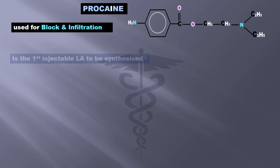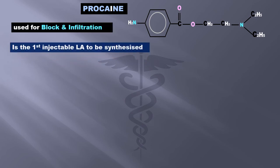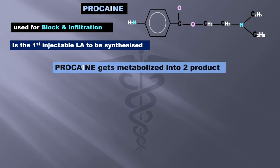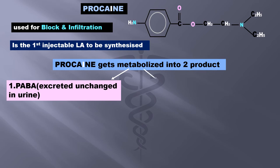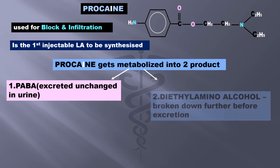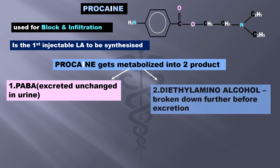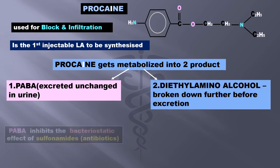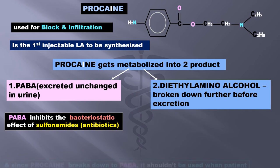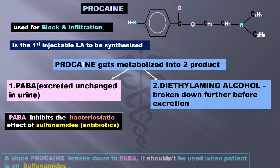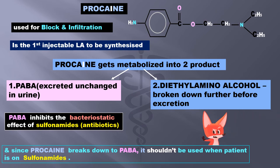Procaine is used for block and infiltration. It is the first injectable LA to be synthesized. Procaine gets metabolized into two products: one, PABA which is excreted unchanged in urine; and two, diethylamino alcohol, broken down further before excretion. PABA inhibits the bacteriostatic effect of sulfonamides, so since procaine breaks down to PABA, it should not be used when a patient is on sulfonamide drugs, as the antibiotic will then be less effective.